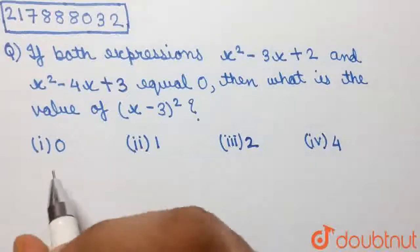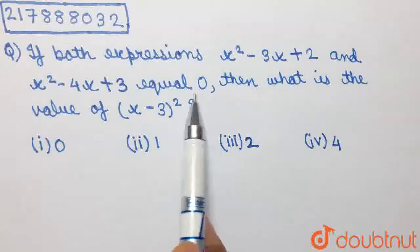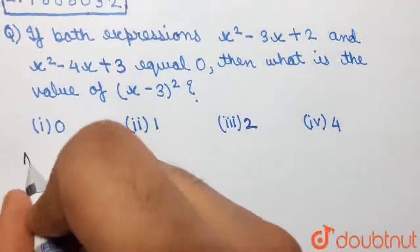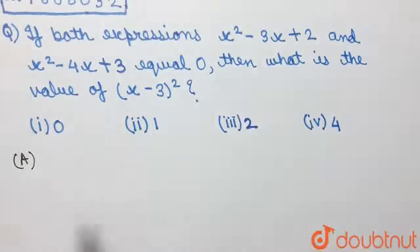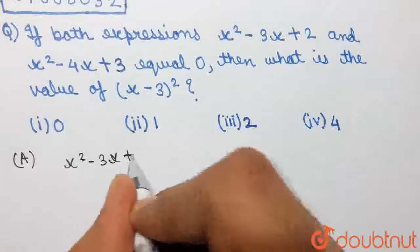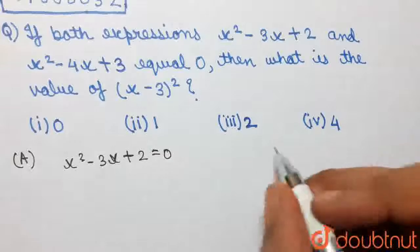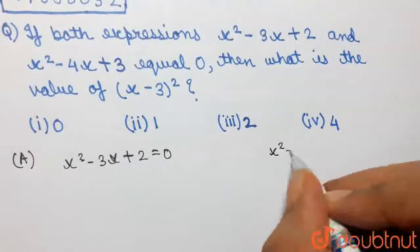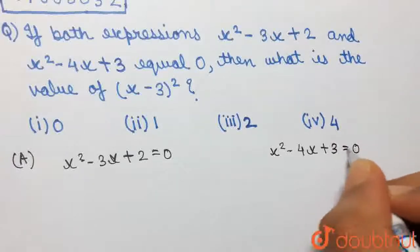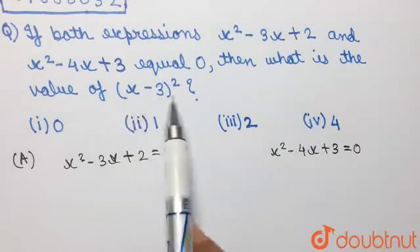So, the two expressions given to us in the question are this one and this one. It has been said that both of them are equal to 0. Equating both the expressions to 0, we now have two quadratic equations and we have been asked to find the value of (x-3) whole square.